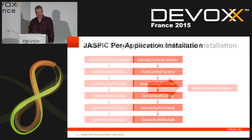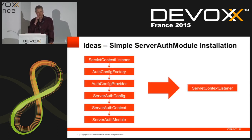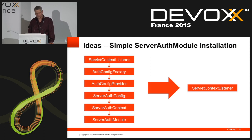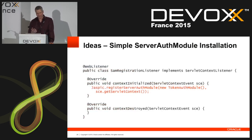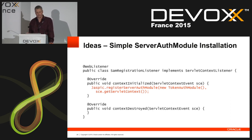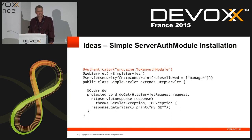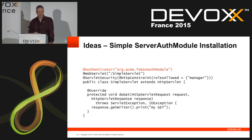So our first simplification: we'd like to change that to essentially one method. We want to have helpers in place to simplify the installation so that all you have to do is create a servlet context listener. The way that would look in code is we'd have a JASPIC helper — in this case just called 'JASPIC' — and we'd have a method called 'register server auth module' where you provide an instance of your server auth module, pass along the servlet context, and that's it. If you don't like writing code, maybe we'll have an option for an authenticator annotation — you just apply the server auth module as the value for the annotation, and you're done.